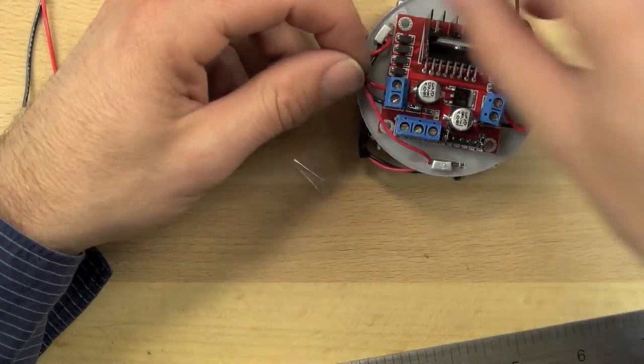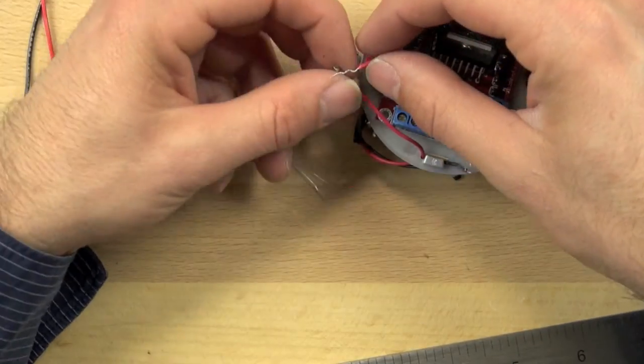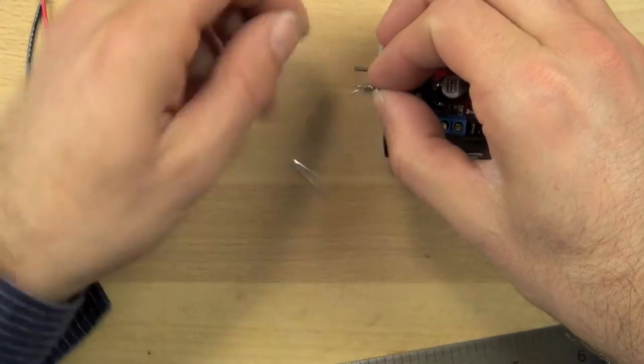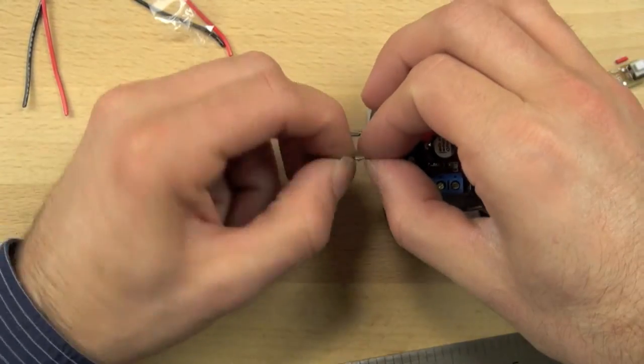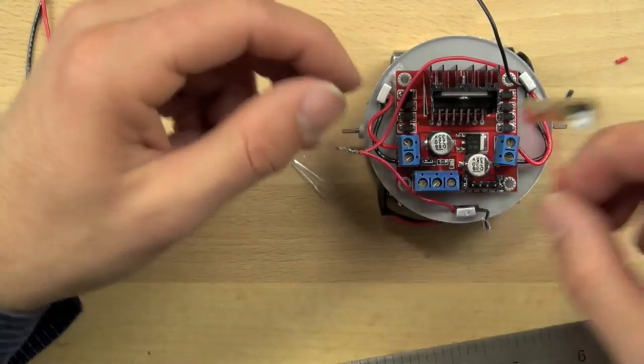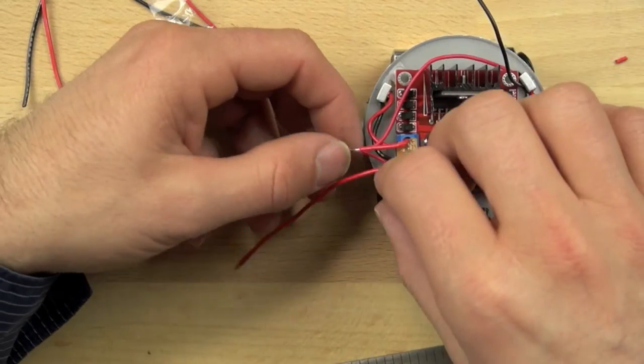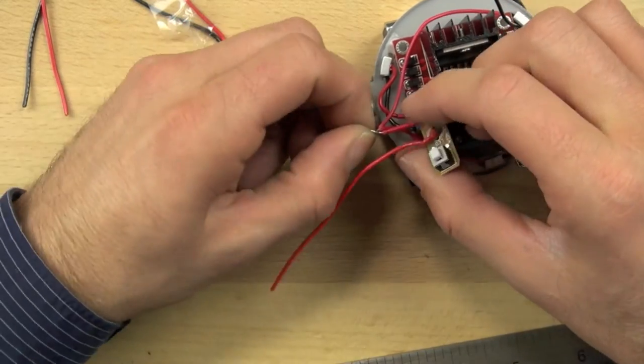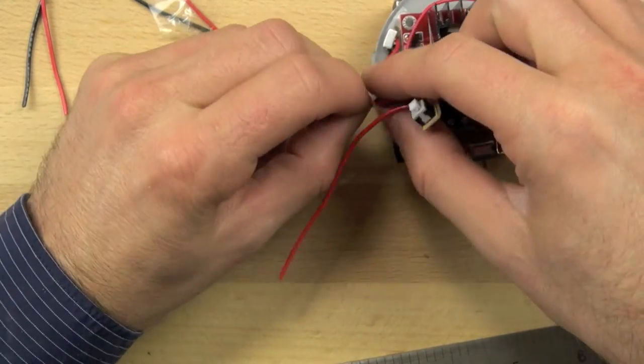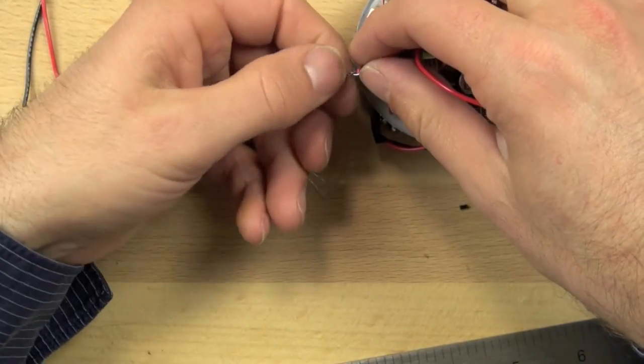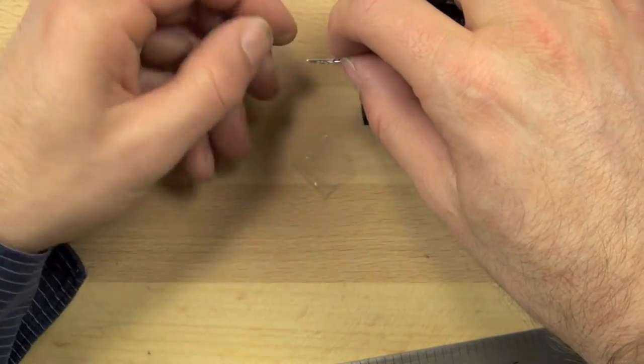The wires from the battery we're going to twist together. So we have two red wires, we're going to twist those together. We're wiring the batteries in parallel because we want to keep the voltage the same but increase the amount of time we can run the batteries. So we're going to twist those wires together with the short wire from our switch.